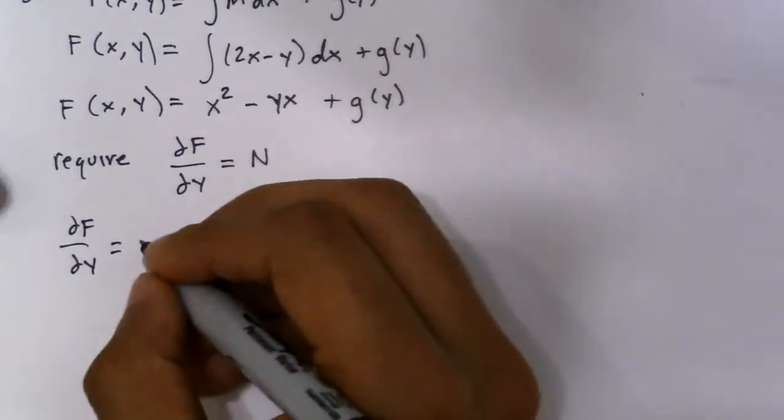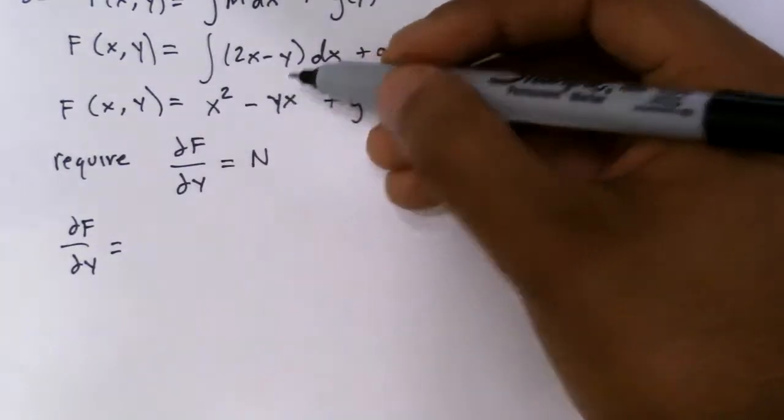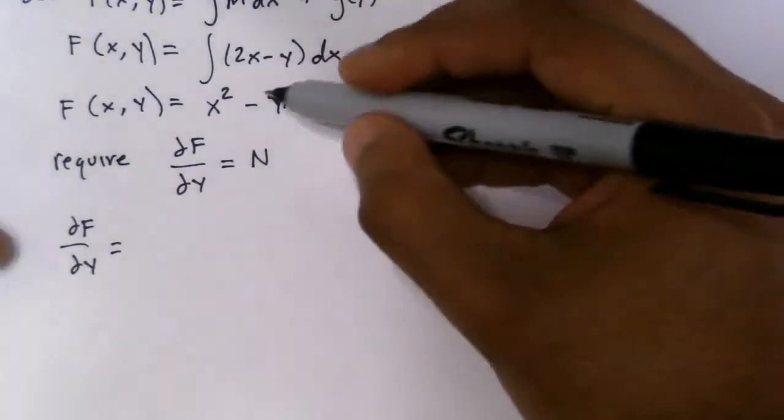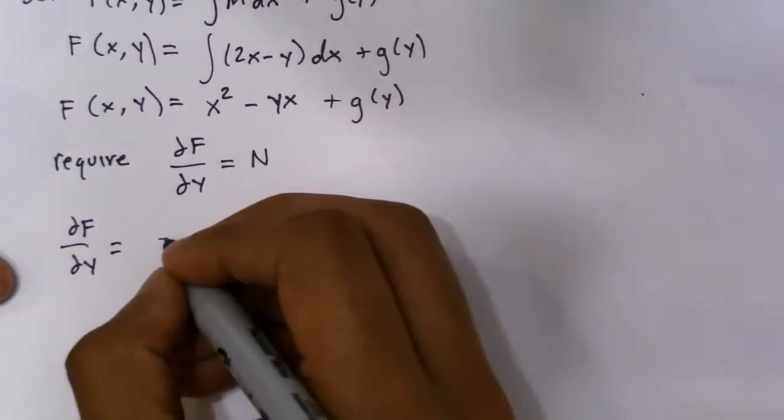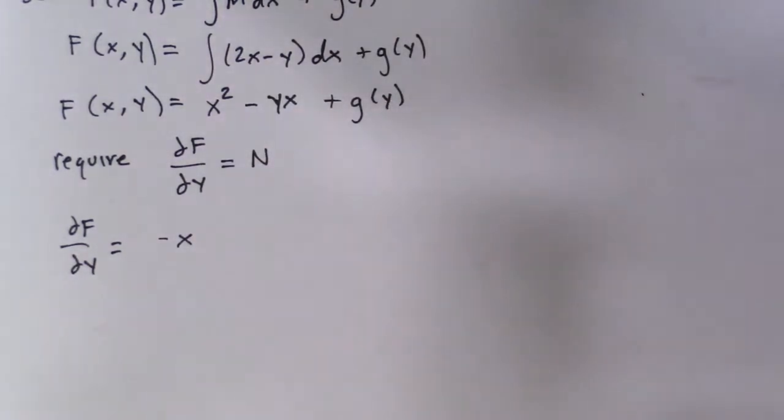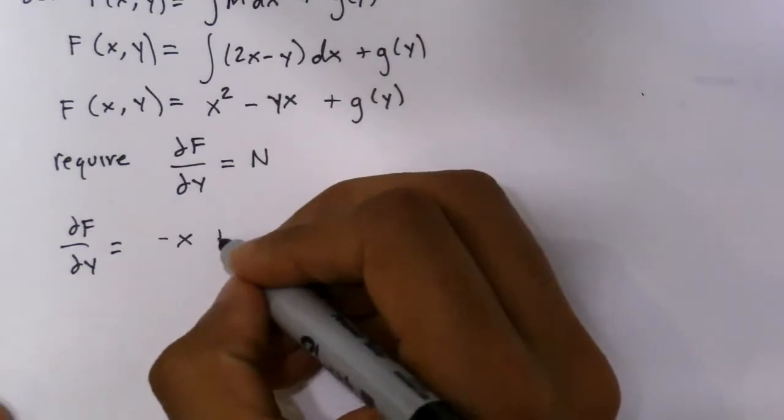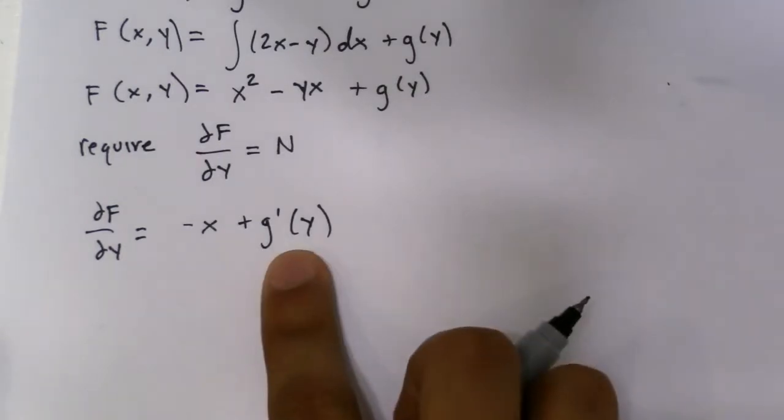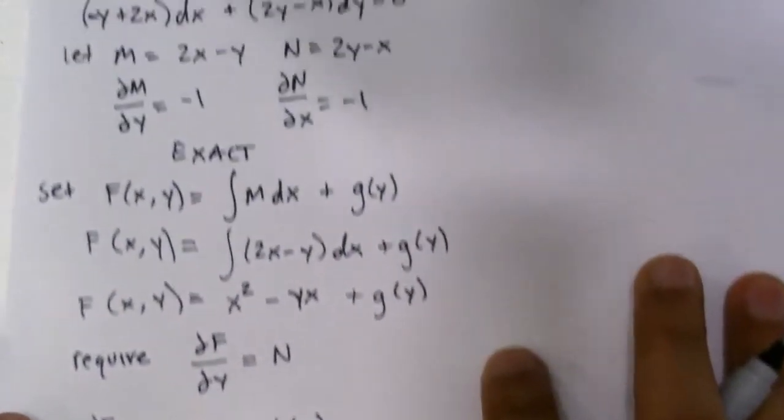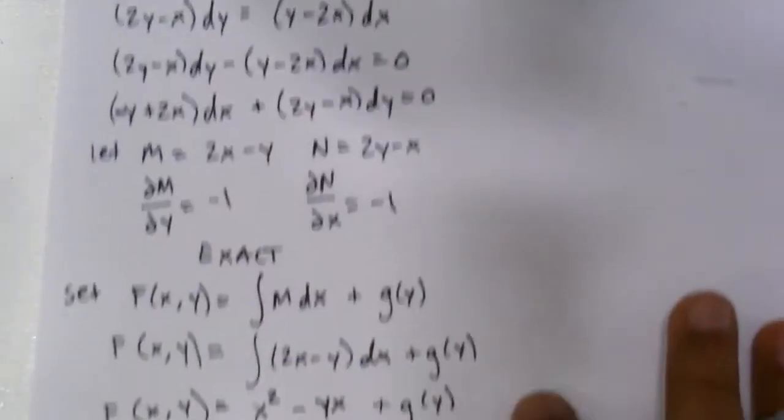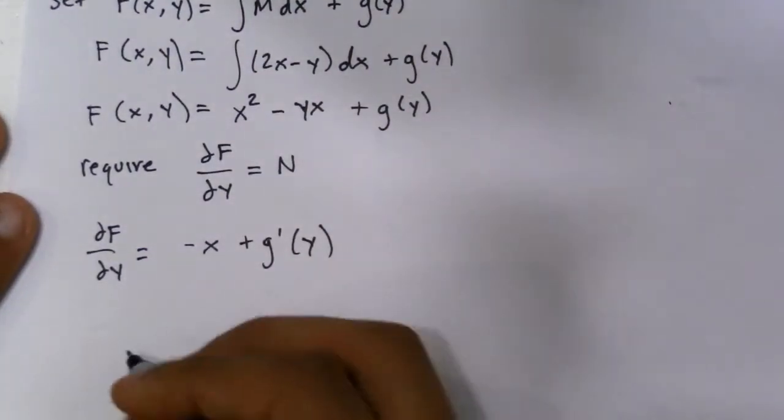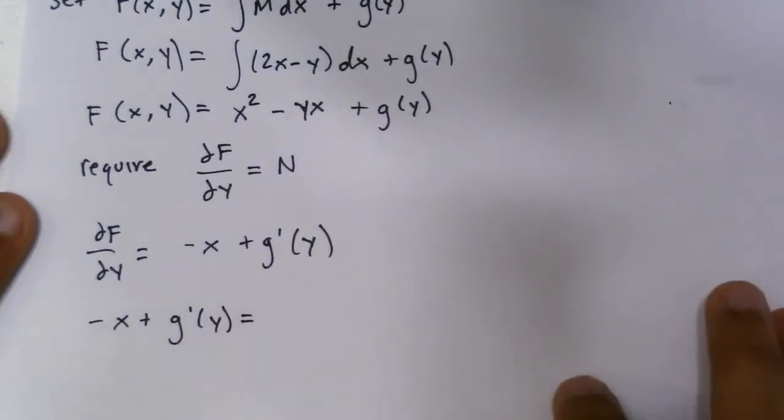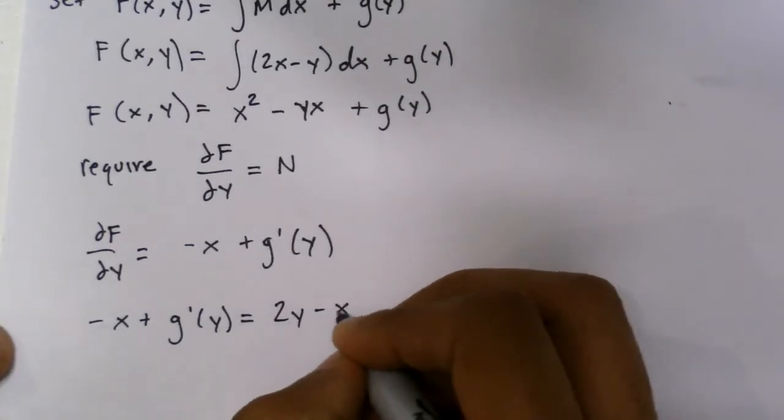This has a y, but it's only a y, so that means when you take the derivative, just a variable, it's just one. So it's negative one times x, so it's just negative x. This is a function of y, so that's very simply just g prime of y. You do that, and now we have to set this equal to N, which we set up here, was this.